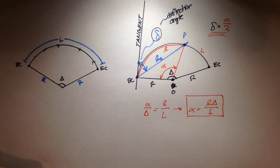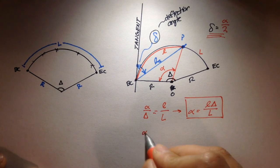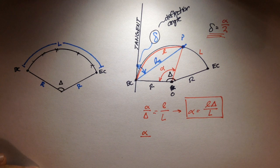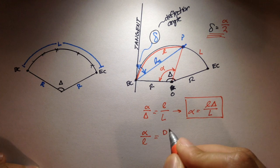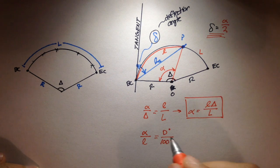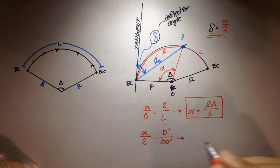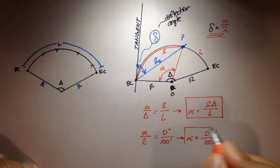There's a second way to compute alpha if the degree of curvature is given. Using the arc definition, little alpha is to little l as the degree of curvature D is to 100. Solving for alpha gives: alpha = degree of curvature times little l divided by 100 feet. That's equation two.